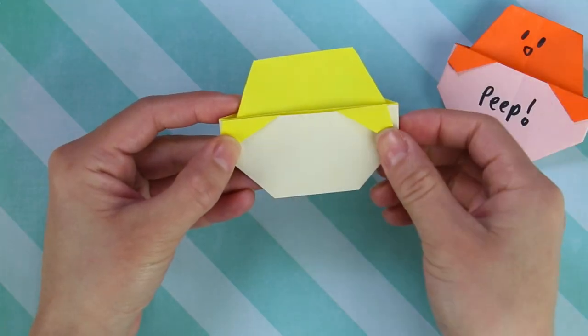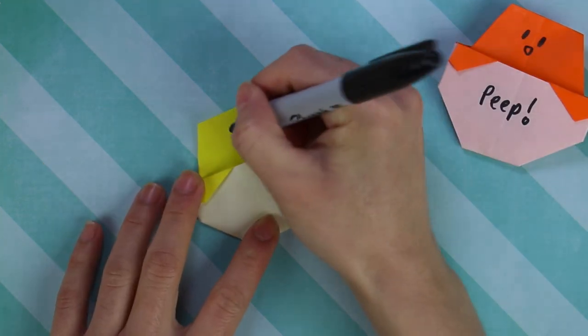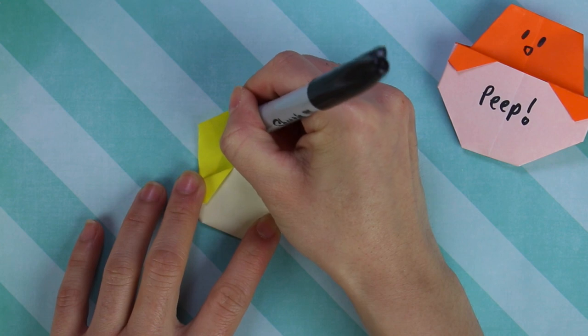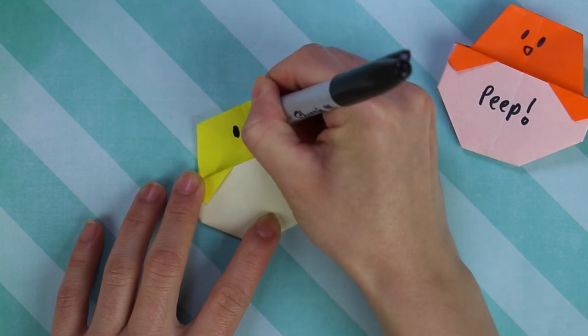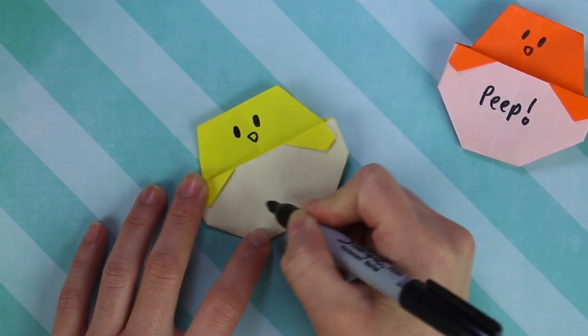So now you got his little face and his two little wings if you will. And now I'm just grabbing a sharpie and I'm drawing on his two little eyes. And beak. And you can write a little message over here as well.